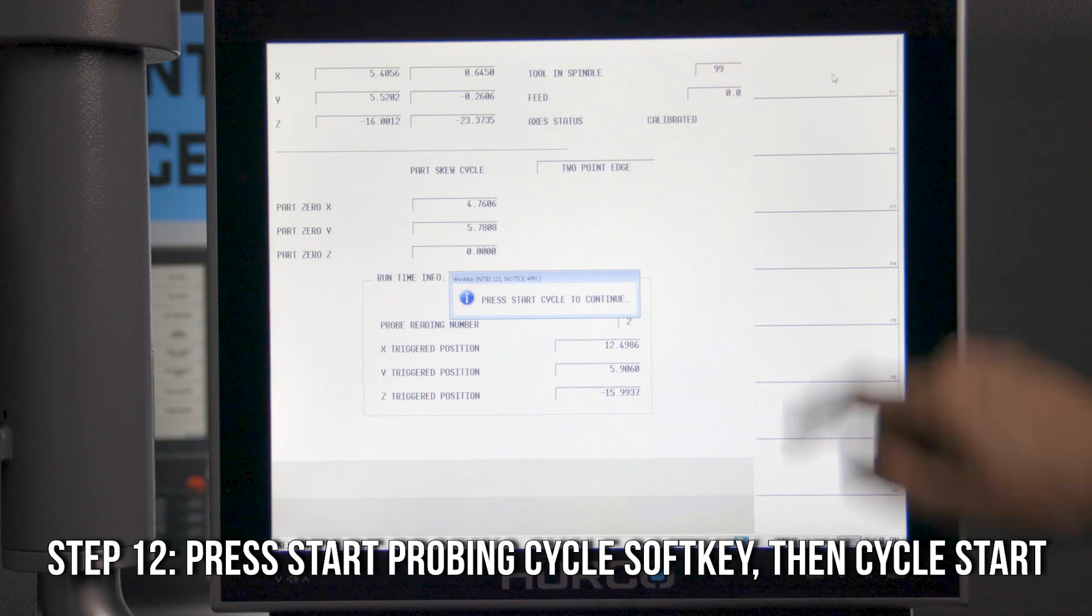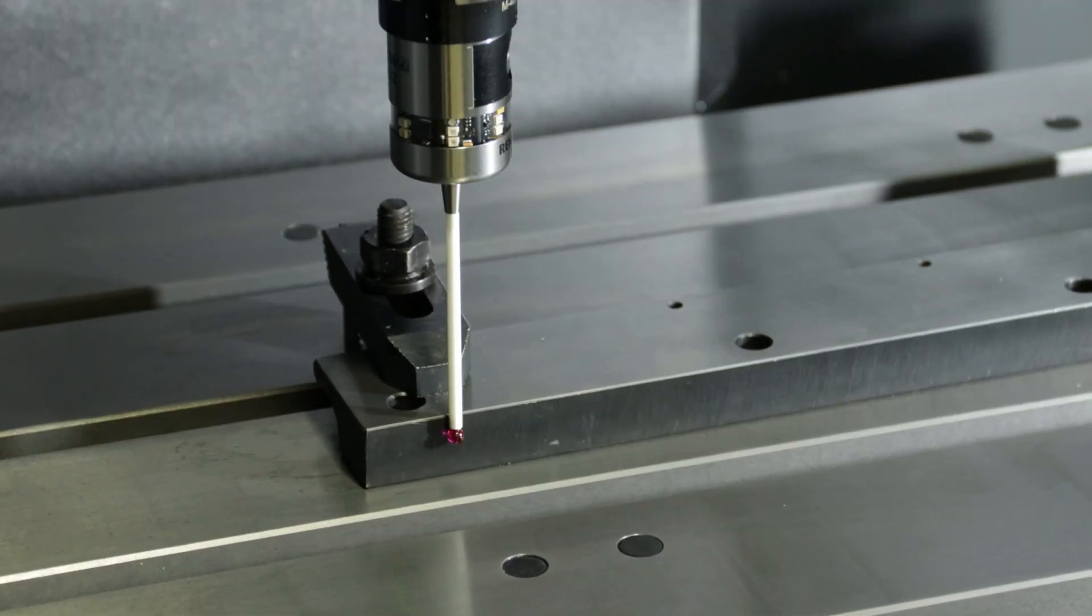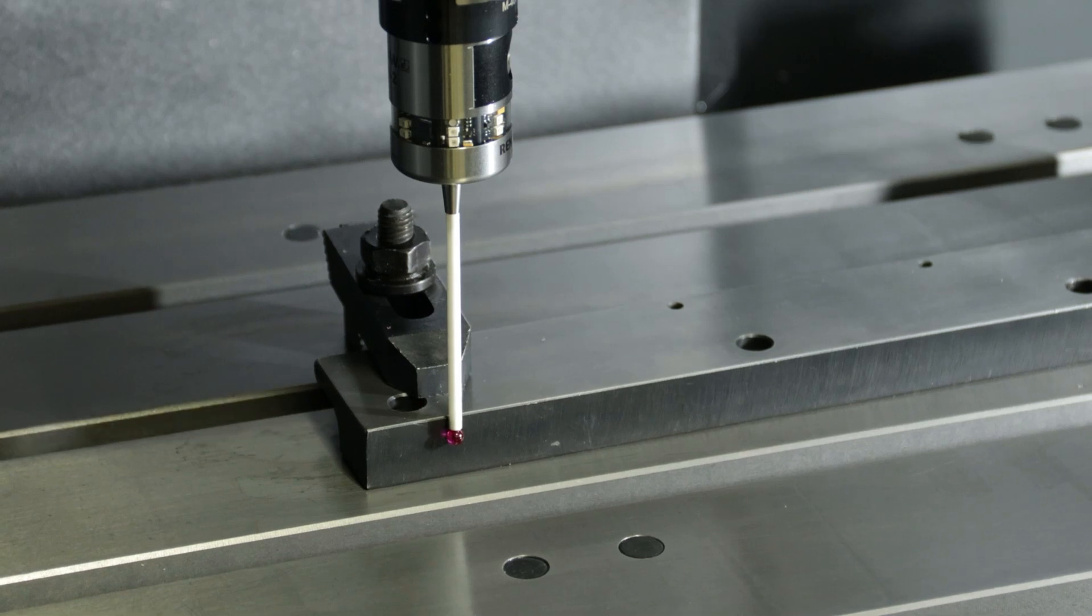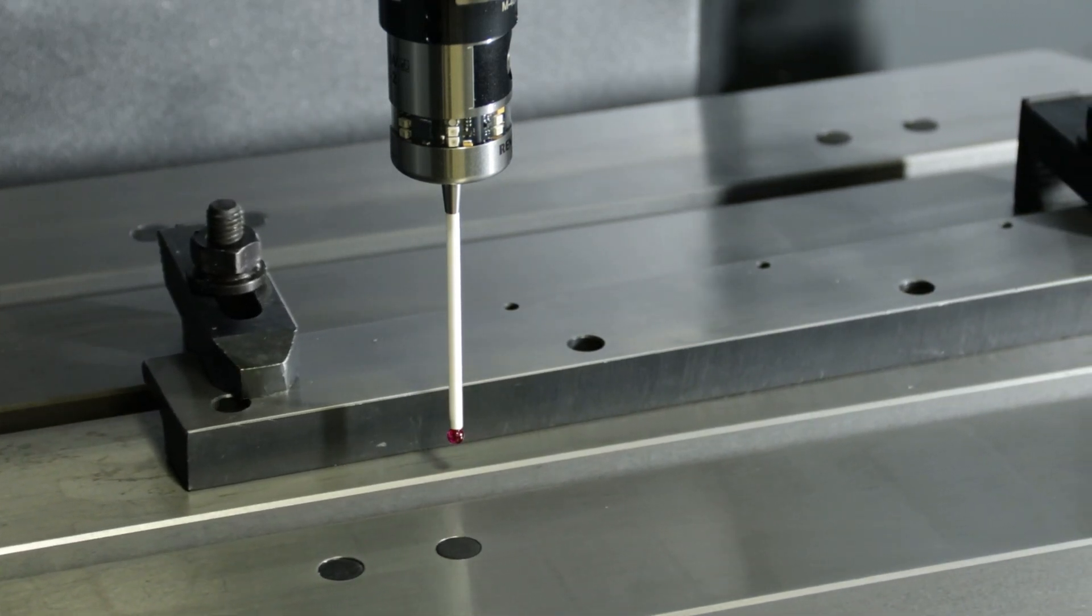In this example, you can see that the probe will make its first bump, then it will move eight inches, which is the offset we set for our probe for its second bump.